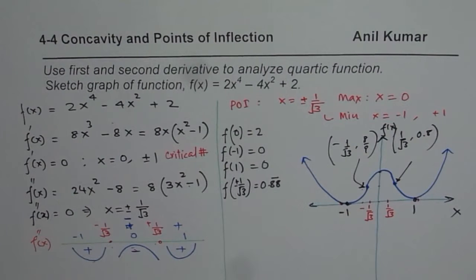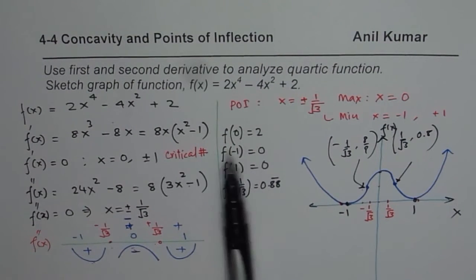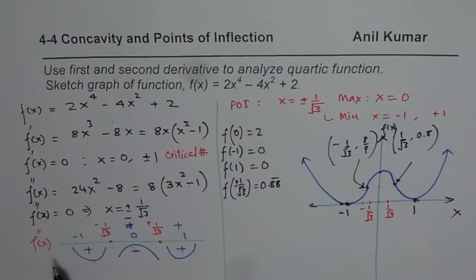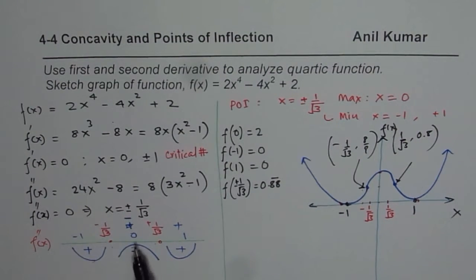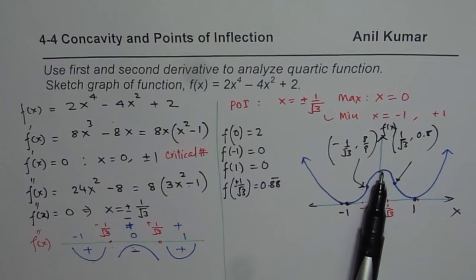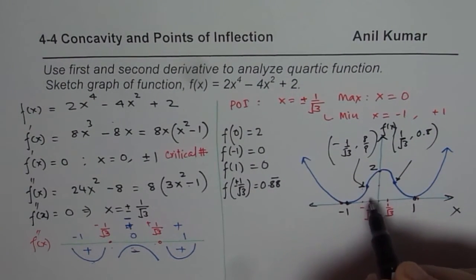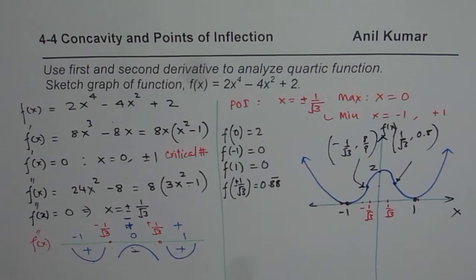To summarize: to find local maximum and minimum, we found the critical points from the first derivative — there were three: 0, +1, and -1. At these critical points, we checked the value of the second derivative. If the second derivative is positive, we have a minimum; if negative, we have a maximum. We used concavity and points of inflection to sketch the graph of f(x).